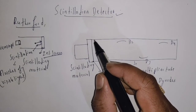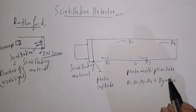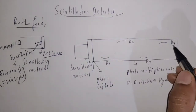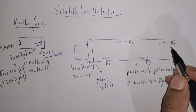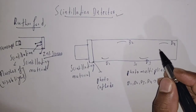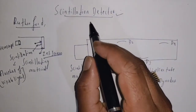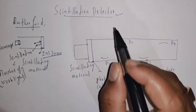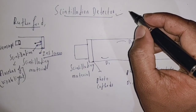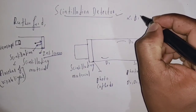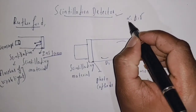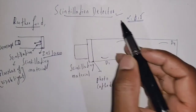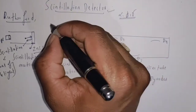The cathode is attached to the photomultiplier tube and this photomultiplier tube consists of dynodes D1, D2, D3, D4. This is all about the construction of the scintillation detector. This scintillation detector is used for the detection and measurement of nuclear radiations such as alpha, beta, and gamma radiations.